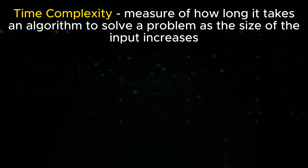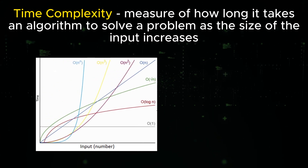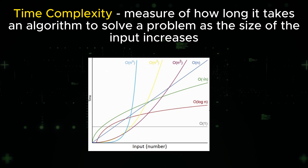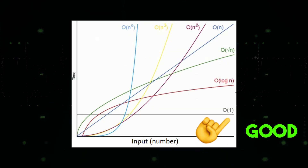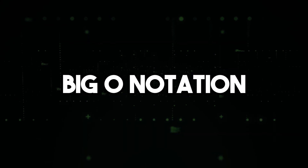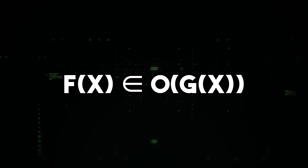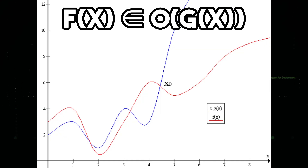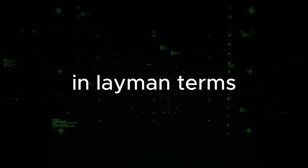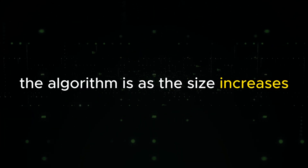Time complexity is a measure of the amount of time it takes an algorithm to solve a problem as the size of the input increases. In other words, it's a measure of how efficient an algorithm is. Time complexity is typically expressed in big O notation, which is the mathematical notation used to describe the limiting behavior of a function when the argument tends towards a particular value or infinity. In layman terms, it just means how efficient the algorithm is as the size increases.